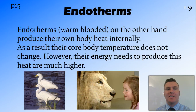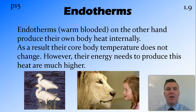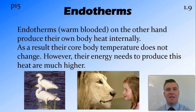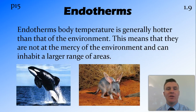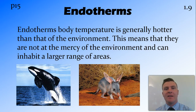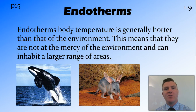What you will find in the Arctic are endotherms — warm-blooded animals that produce their own heat internally, usually as a by-product of respiration. This means they have a much higher demand for energy and have to eat a lot more food. But the benefit is that their core body temperature stays the same, generally a little bit hotter than the environment they live in. This means they are not at the mercy of the environment, can live in colder areas, and therefore have a larger range of areas on Earth in which they can live.